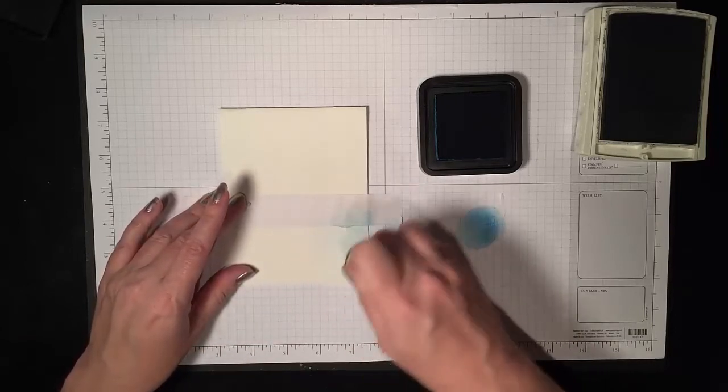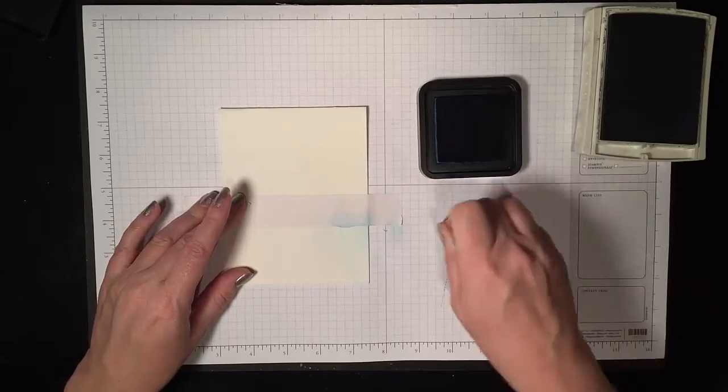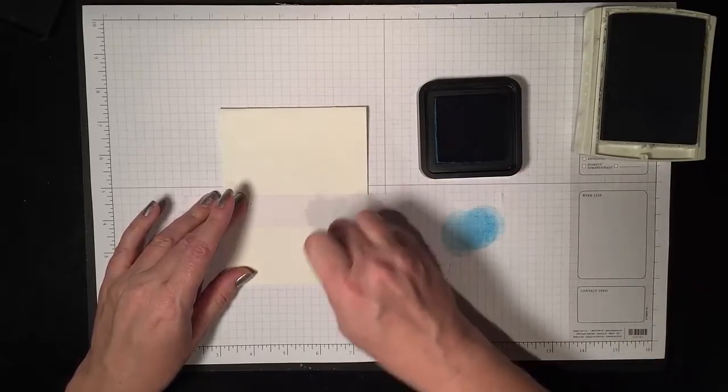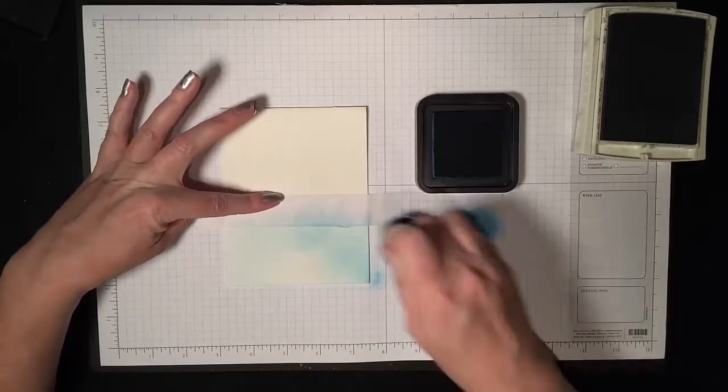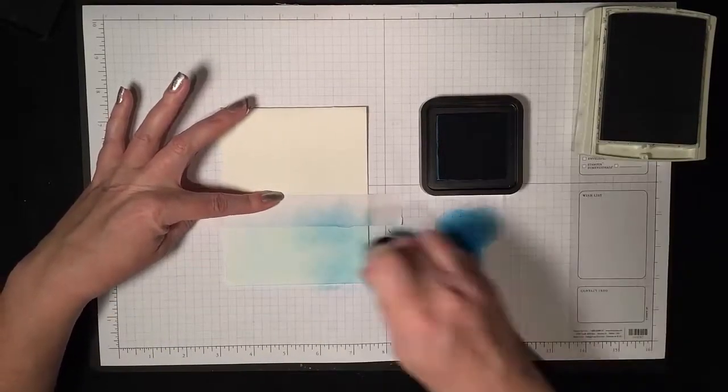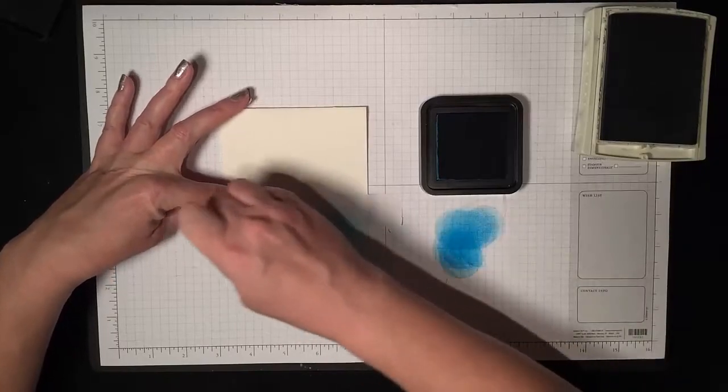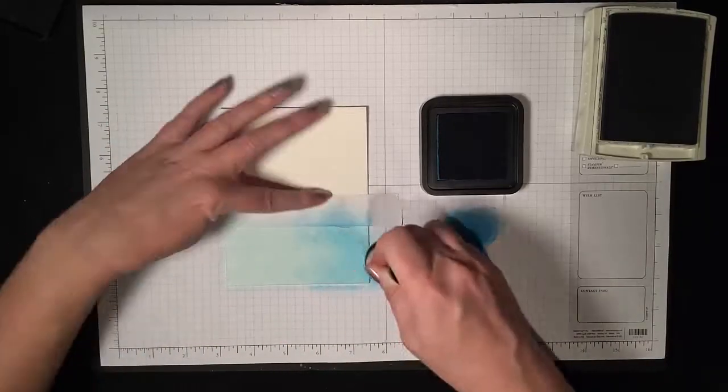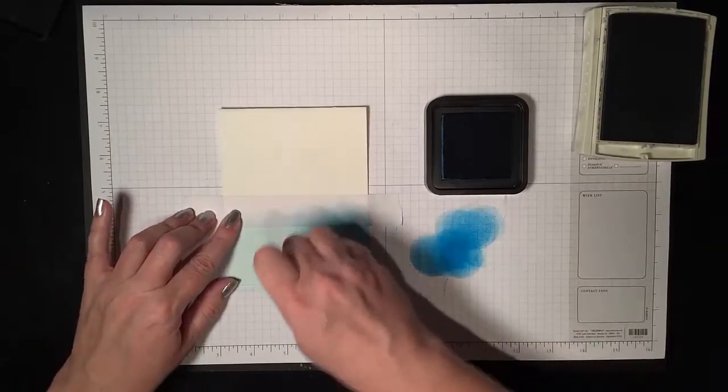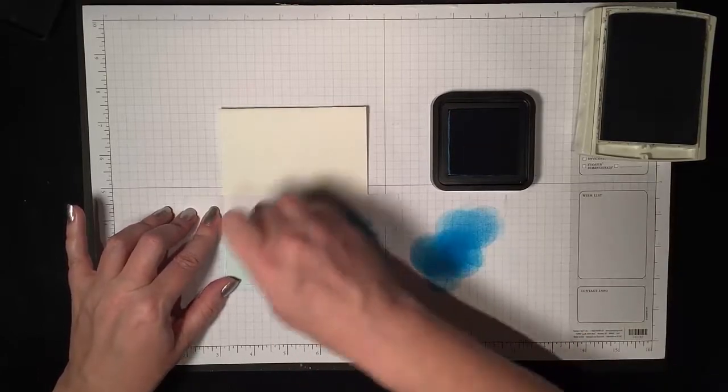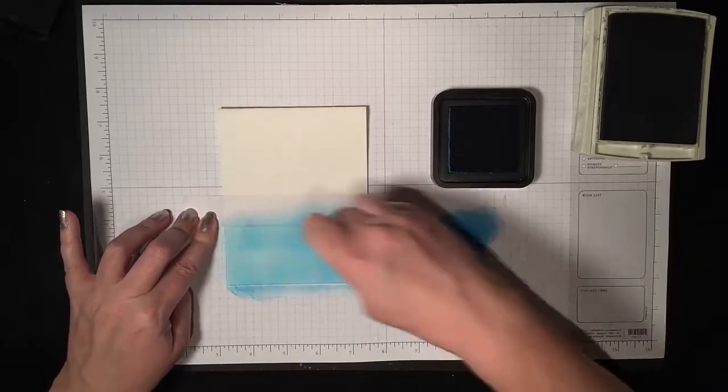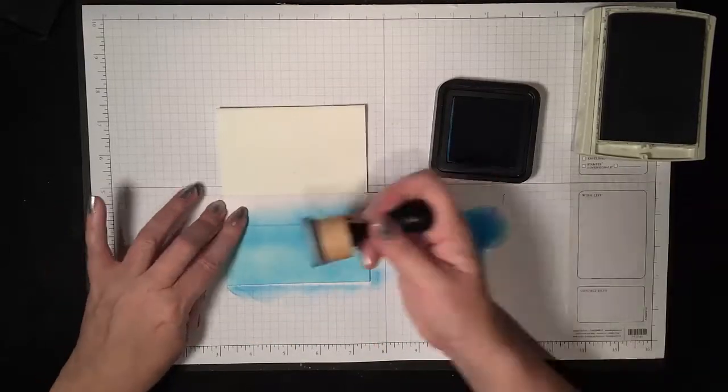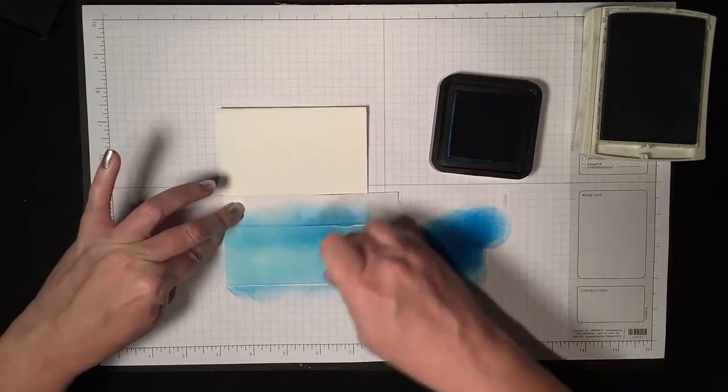Now I'm using a Ranger ink blending tool in this gorgeous new Distress color which is called Mermaid Lagoon, perfect for an ocean, and it is a very oceany blue, I just think it's beautiful. I want it to be pretty saturated, and since this is watercolor paper and not cardstock, you're going to need to put a little bit more ink down to get sort of that jewel tone that this color has. And just watch your tape, I moved mine a little bit.